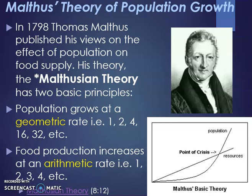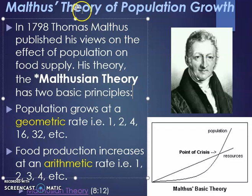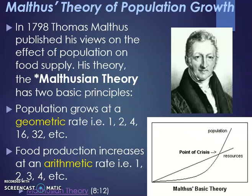The next flash card is Malthusian Theory, named after Thomas Malthus, who published his views in the late 18th century. He believed population would grow at a geometric rate — doubling from one to two to four to sixteen to thirty-two — while food production increases at only an arithmetic rate: one, two, three, four in sequence.